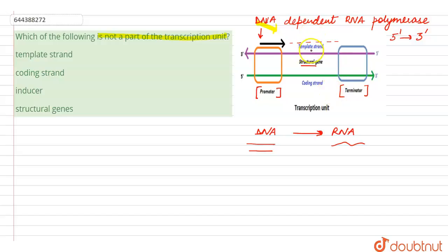We have a template strand which acts as a template, whereas another strand, the opposite strand which is complementary to the template, is called the coding strand. The newly formed RNA will have the same sequences as the coding strand.